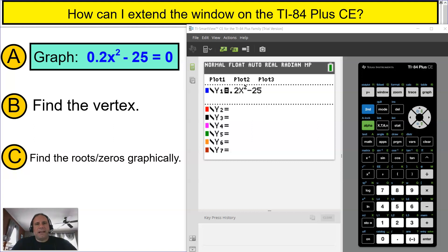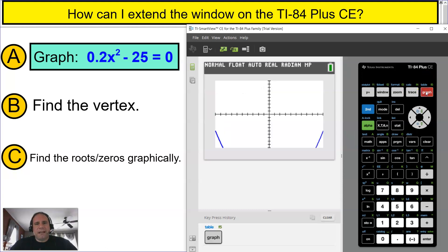As you can see, I have 0.2x squared minus 25 already inputted into the calculator, and I'm going to press graph to see what this parabola looks like because I want to solve for the next question here, find the vertex. I'm going to press graph and I see exactly what is on that calculator screen, and I cannot see the vertex.